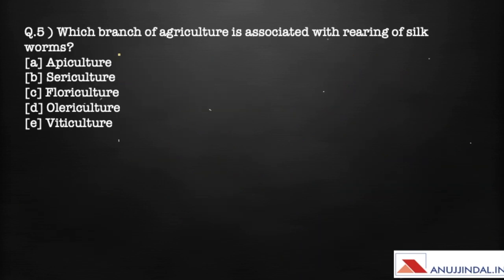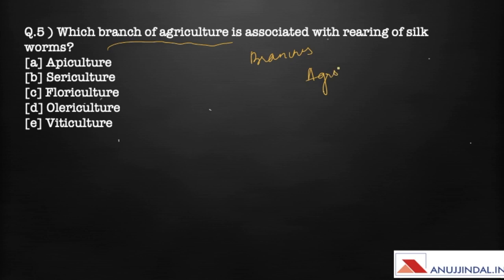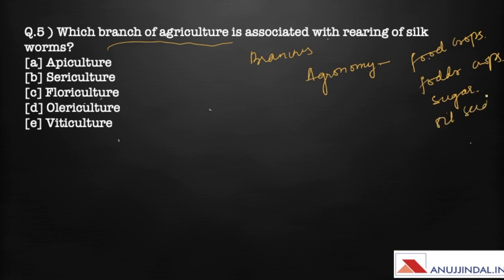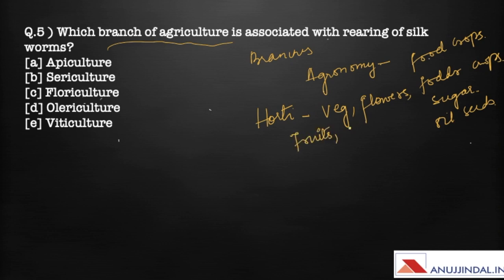The last question deals with the branches of agriculture, found in the first chapter. There are seven branches of agriculture. The first is agronomy, which deals mostly with seed food crops, fodder crops, sugar, and oil seeds. The second is horticulture, which deals mostly with vegetables, flowers or ornamental plants, fruits, condiments and spices, and post-harvest technology.